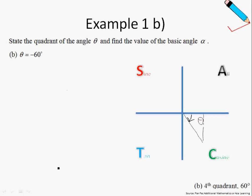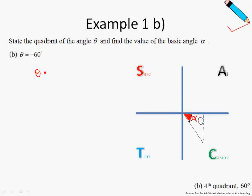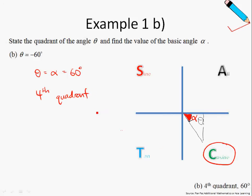Where is alpha? Recall that alpha is always measured with respect to the horizontal axis. So this angle is my alpha. In this case, theta happens to equal alpha. Alpha is always an acute angle that is positive, so alpha is just 60 degrees. The quadrant we are in is the fourth quadrant — the cosine quadrant.